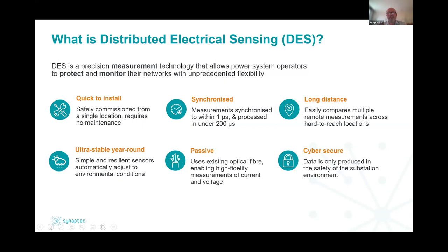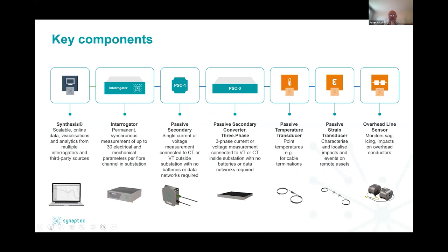Many people have had experience with technologies like non-conventional instrument transformers using the Faraday effect to polarize light and measure current — but that's not the same physics and it's not what we're doing. We've taken another step forward and discovered a technology which is immune to the problems that LCITs or NCITs classically have. To give an overview, the core of the technology is a very modular and scalable system. The core component is the interrogator.